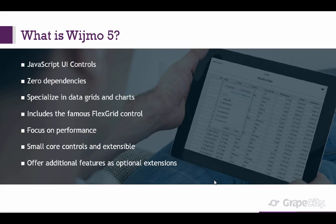We focus on performance — it's our number one feature. We also want to keep our core controls small and extensible. We bake in the key features in our core controls, and our core controls have a rich extensibility model. For additional features that many customers request, we provide those as extensions. For example, many people request an Excel-like filter on our FlexGrid. Rather than build that in and add bloat, we offer an optional extension that extends the FlexGrid and adds that functionality. Our customers also develop their own extensions.